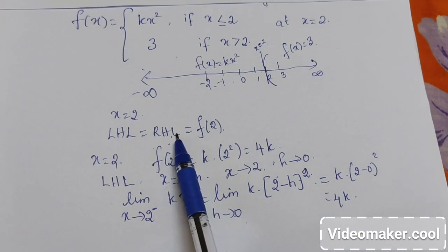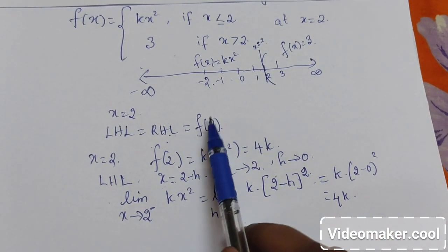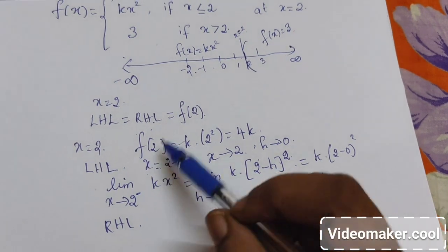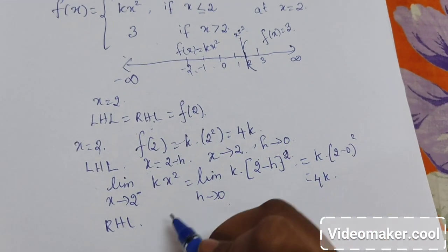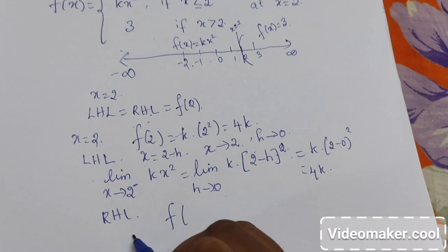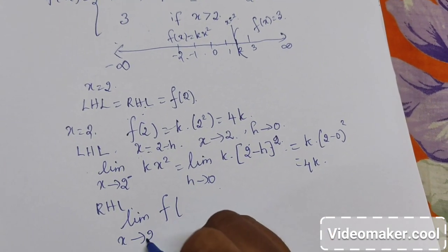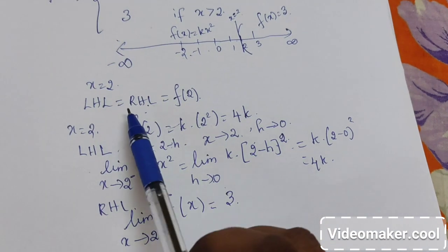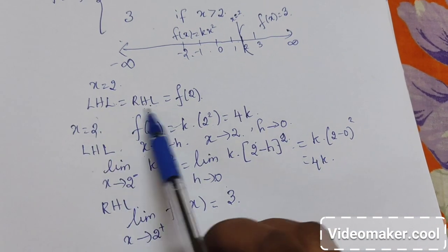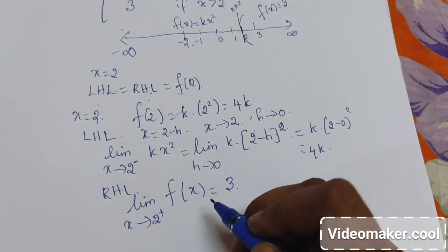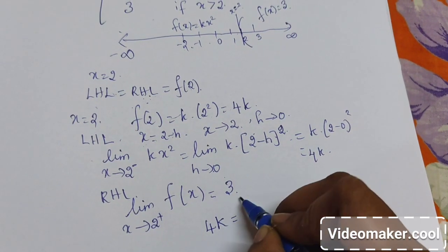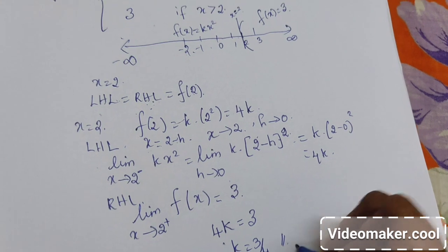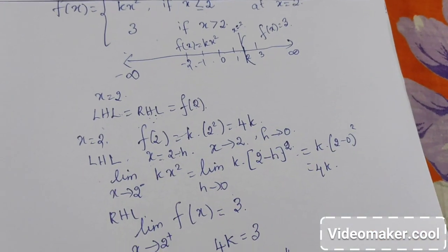As we have assumed the function is continuous at 2, the left hand limit equals the functional value. Now we will calculate the right hand limit. In the right hand limit, the function is 3 only. So the limit x tends to 2 from the right hand neighborhood is 3, a constant. Since the function is continuous, this limit equals the functional value 4k. So 4k is equal to 3, and k is equal to 3/4. That is the value of k so that the function will be continuous at x equal to 2.